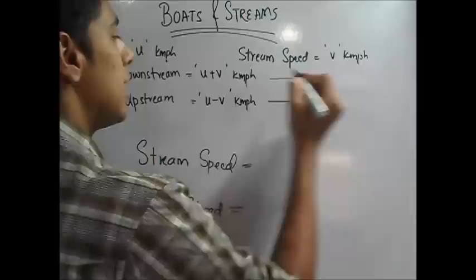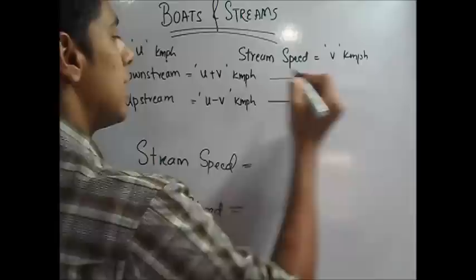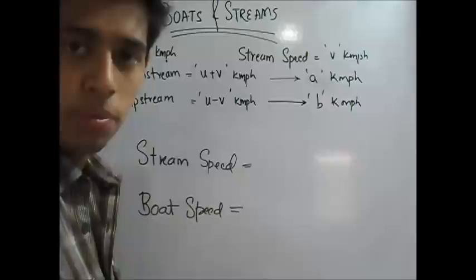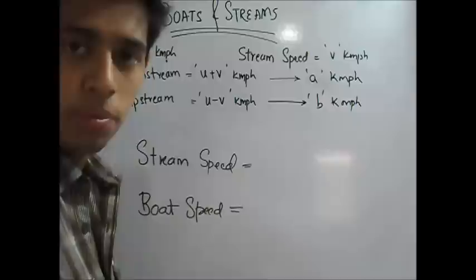Your boat speed is u, stream speed is v. Downstream is u plus v and upstream is u minus v. Let us assign that a will denote your downstream speed, a kilometers per hour. And this will be b kilometers per hour. A still is u plus v and b still is u minus v.